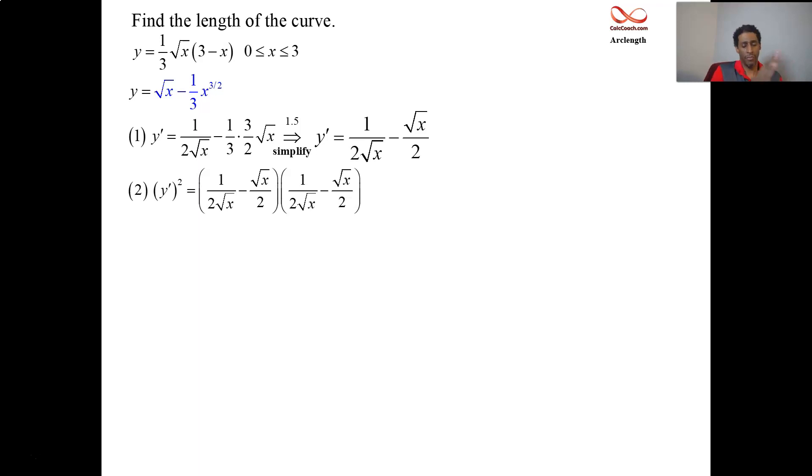1 over 2 root x times 1 over 2 root x is 1 over 4x. Here is the beginning of a pattern that I need you to become able to recognize. When you do the o and i from FOIL and you get minus 1 fourth and minus 1 fourth for your middle term combining to be minus 1 half by simplifying it,